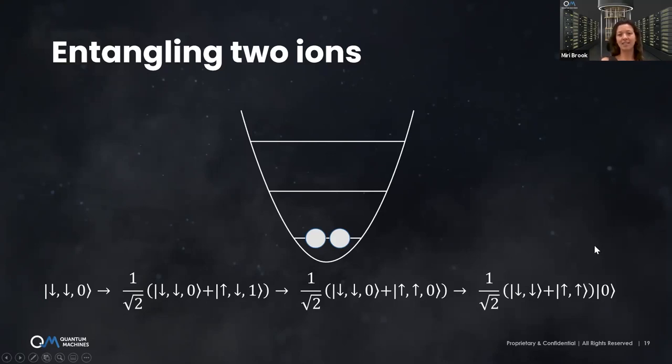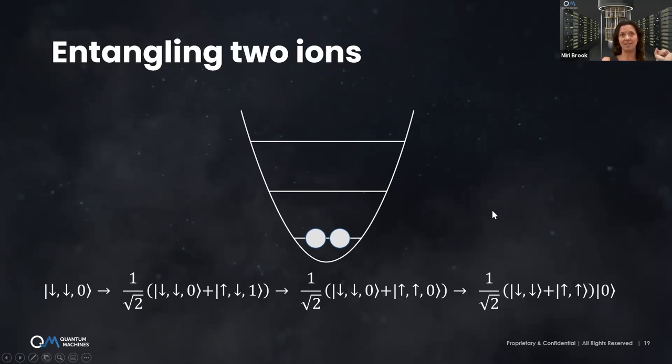Here I will show work done at NIST and lately published in Nature from Daniel Slichter's group, which shows high-fidelity universal control of two trapped ion qubits. The qubit control was done only with microwave qubit drive. It's not completely laser-free because still all the cooling, trapping, and readout is done by laser. But the qubit operations, the ones that are sensitive to decoherence, are done without laser. So that's really the goal.